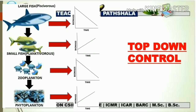This diagram helps clarify the concept using an aquatic ecosystem example. The first level is phytoplankton — small microscopic plants in water bodies. The second level is zooplankton — small animals present in the aquatic system. The third level is small fish, also known as planktivorous fish, and the fourth level is large fish, known as piscivorous fish. In top-down control, the large fish controls the small fish, the small fish controls zooplankton, and zooplankton affects phytoplankton.